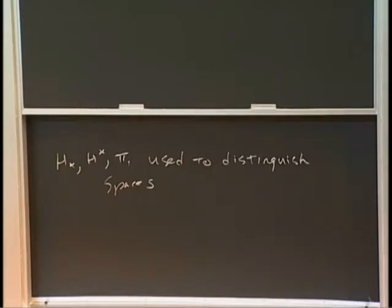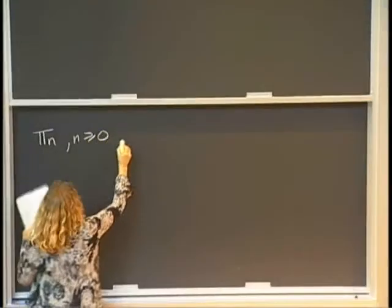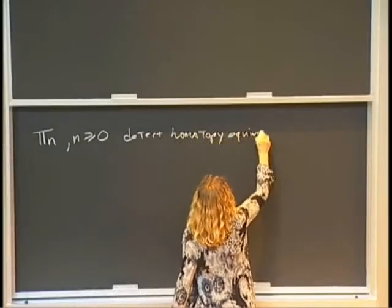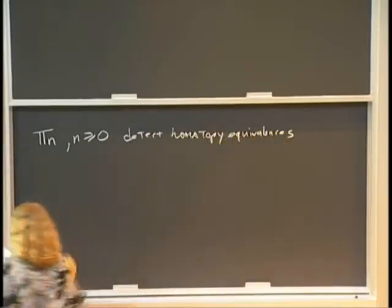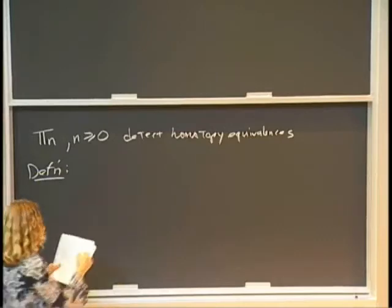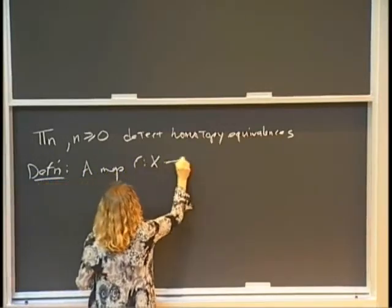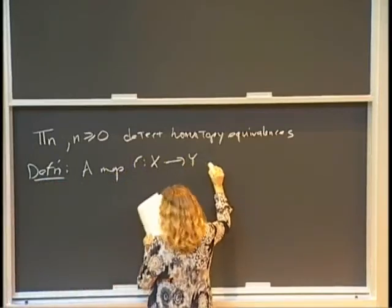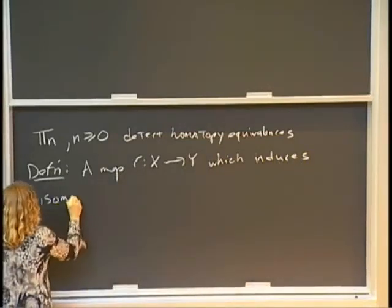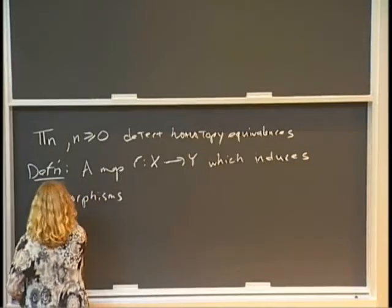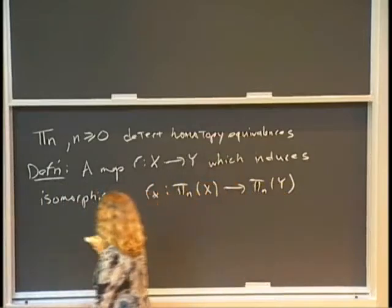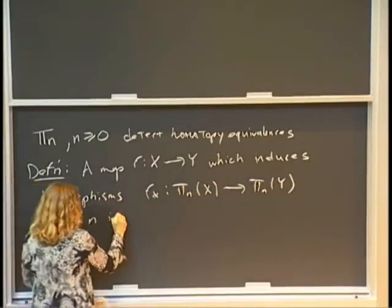So pi_n, these higher homotopy groups, are actually used to detect homotopy equivalences. So they're a more powerful invariant than homology and cohomology. So just to explain what I mean by detect homotopy equivalences, let me start by saying a map f from X to Y which induces isomorphisms on these higher homotopy groups for all n is called a weak homotopy equivalence.